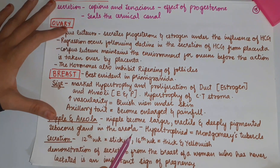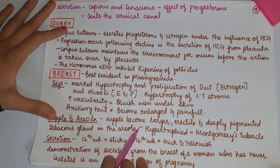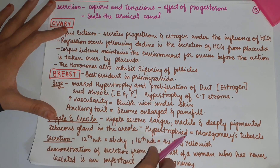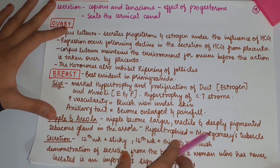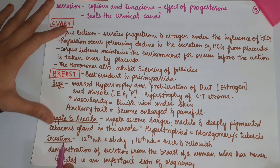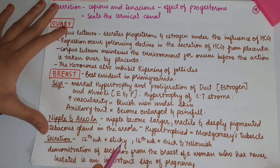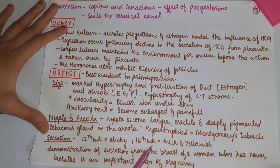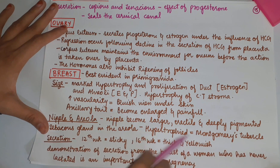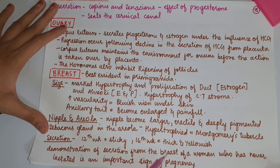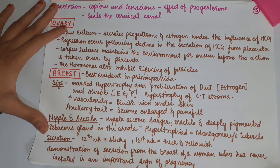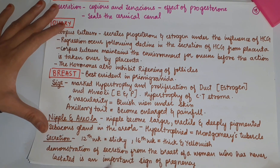Sebaceous glands in the areola become hypertrophied, which are called Montgomery tubercles. Secretion starts even at 12 weeks — at 12 weeks it is sticky, at 16 weeks it is thick and yellowish. Demonstration of secretion from the breast of a woman who has never lactated is an important sign of pregnancy.